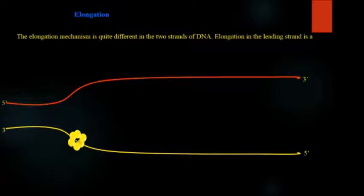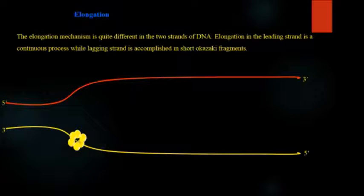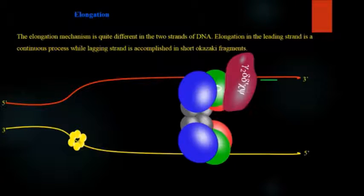The leading strand replication is a very simple mechanism but in case of lagging strand there is a replication which accomplishes with short sequences and this forms Okazaki fragments. First of all primase enzyme will form RNA primer after that it will move away.